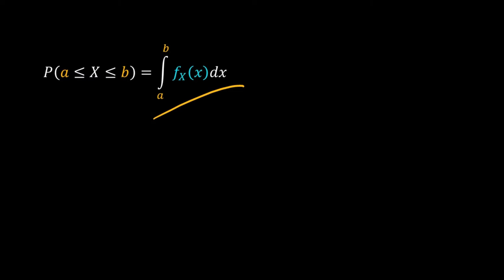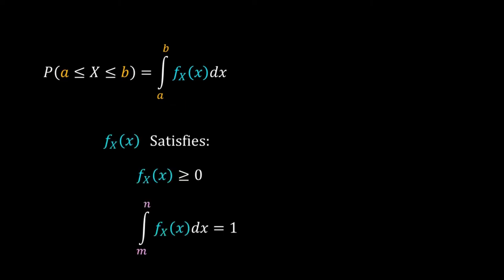To calculate this probability, imagine we have a function f(x) such that the integration of this function from a to b gives us the probability. This function must satisfy two criteria: it must be non-negative, and the integration of this function from m to n — the whole domain of X — must equal 1. This function is called the probability density function. Note the word 'density' in PDF: the PDF is not a probability, it is a density — probability per interval — therefore, unlike a PMF, it can be greater than 1.